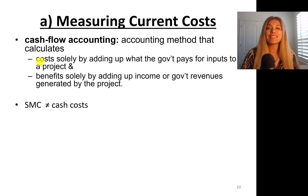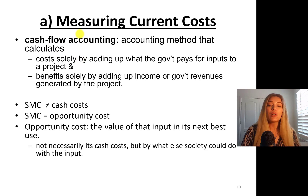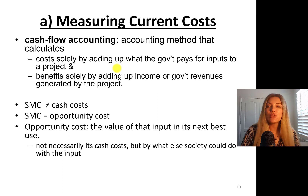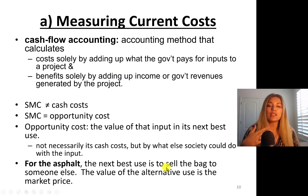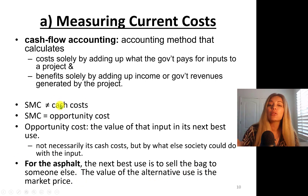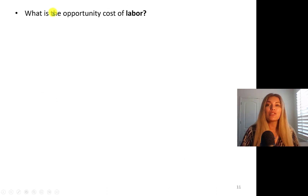Social marginal cost is not equal to cash costs. Social marginal cost entails the opportunity cost of a project — the value of an input in its next best use, not necessarily its cash cost. For asphalt, the opportunity cost equals the market cash cost. The next best use is to sell the bag to someone else at market value, so for asphalt, cash cost equals opportunity cost.